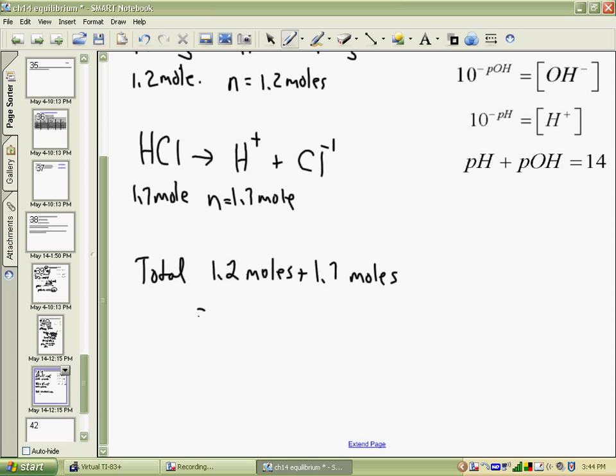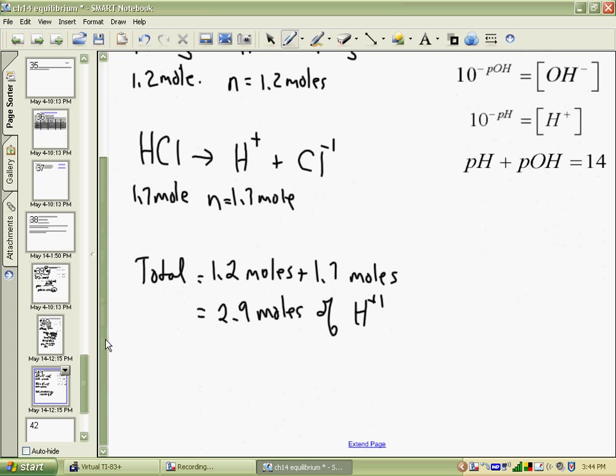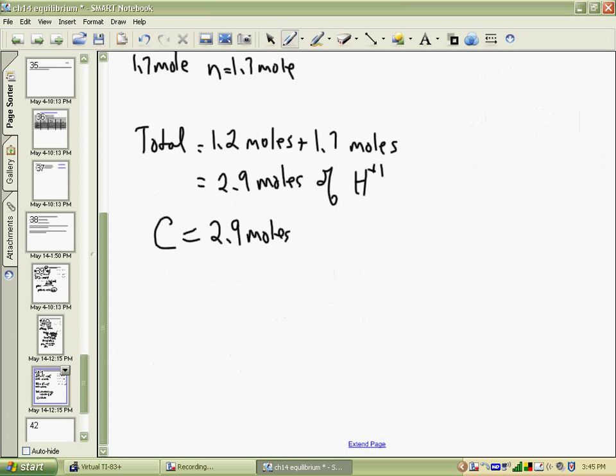So if that's how many moles of hydrogen ions I have in 1,000 liters of water, then I have to work out my concentration. 2.9 moles in 1,000 liters gives you 2.9 times 10 to the minus 3 moles per liter of H+ ions. And the question, if you recall, is asking us to work out the pH of that solution.